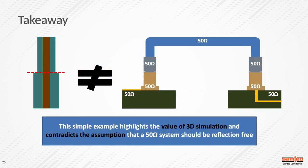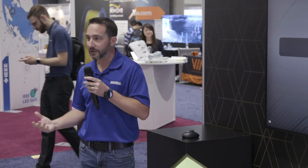Fundamentally, this is a 3D effect. The discontinuity is visible inside the 3D fields where it was not understood from just a circuit simulation point of view. If you're looking at system design from a perspective where everything is 50 ohms, you might assume everything will work out just fine. But anytime you have a change in dimensions or material characteristics, even though it's 50 ohms on both sides of that interface, you have a discontinuity. This simple example highlights the value of 3D simulation — it contradicts the assumption that a 50-ohm system is going to be reflection free.